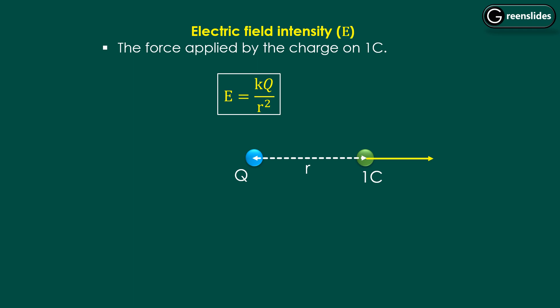Now, instead of 1 coulomb, if we have a charge q at the same position, what will be the force on that charge? Using our basic equation: F = force on 1 coulomb × q, we can write F = qE. Here E is the force on 1 coulomb and q is the magnitude of the charge.